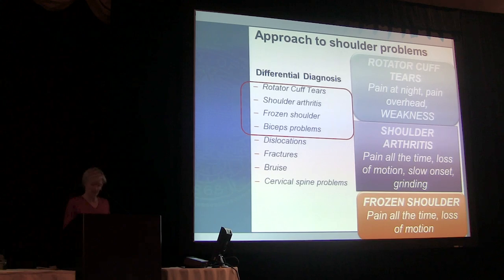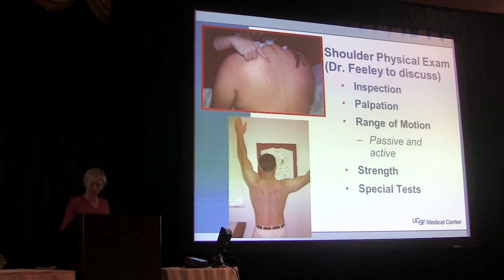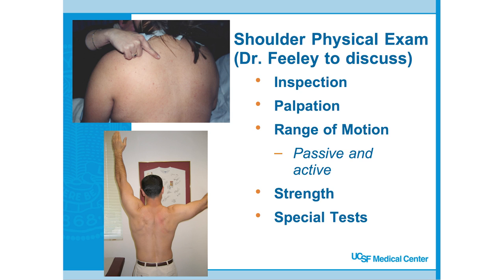History is 90% of the diagnosis. The key questions are: was there an acute injury, are you losing strength, and are you losing range of motion? Those three questions will get you to 90% of the diagnosis without even laying hands on the patient. Then you examine the patient and figure out the rest — amazingly, often without an MRI. Dr. Feely is going to talk about specific physical exams, so I'll give brief bullet points as we get to each problem.